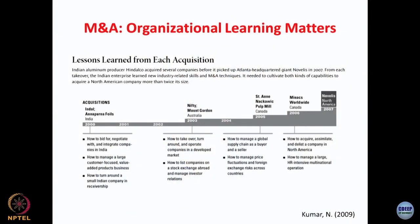Looking at Hindalco's track record over 20 years, the first acquisition in the aluminum sector was Annapurna Foil. They learned how to bid, negotiate, and integrate companies in India, and how to turn around a small Indian company in receivership. Then they acquired Nifty and Mount Gordon in 2003 — Australian firms — which helped Hindalco learn how to take over, turn around, and operate companies in developed countries. It also taught Hindalco how to list companies on the stock exchange abroad and manage investor relationships.